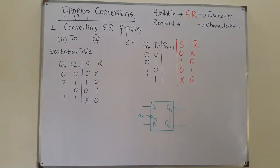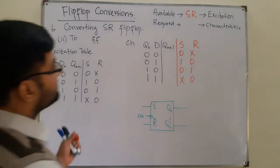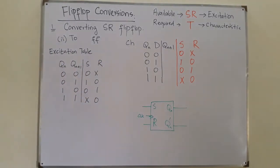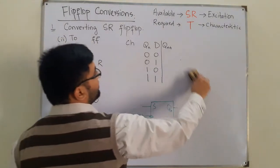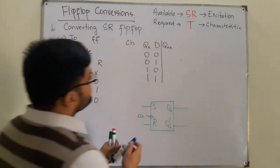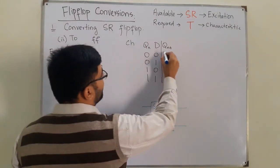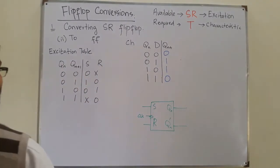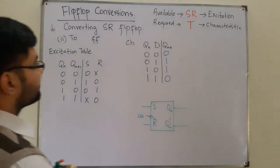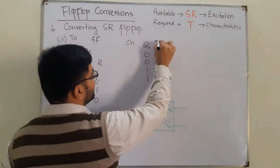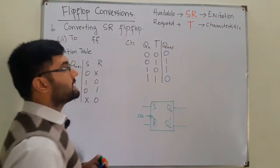Now the required flip-flop is the T flip-flop, so you have to draw the characteristic table for it. The characteristic table for the T flip-flop has outputs: 0, 1, 1, 0 for T input values 0, 1, 1, 0. It works by toggling the present state into the next state.